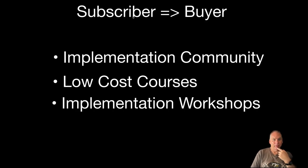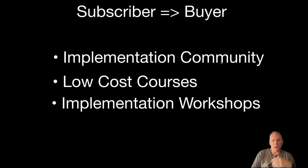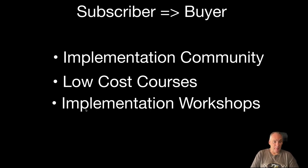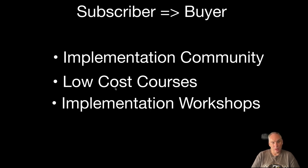To get from subscriber to buyer, these are typically what you can use: an implementation community — a community that helps people take action and put things into practice — plus low-cost courses and implementation workshops. These will help you build an income and help your subscribers become buyers and also start to implement.